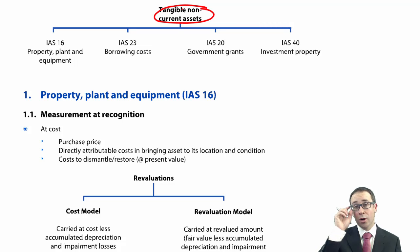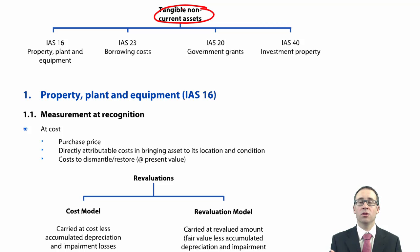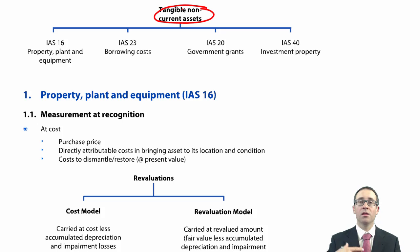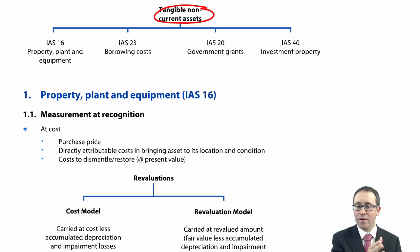In the following videos we'll look at borrowing costs — remember, if you take out a loan with interest, you must capitalise that interest rather than expensing it, provided you meet certain criteria. We'll then look at government grants: money received from the government to help fund the purchase of PPE and how to account for it. And then there's investment property — a separate line item within non-current assets, away from PPE.